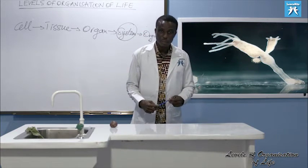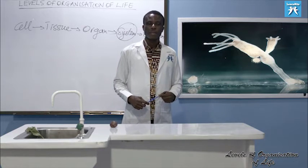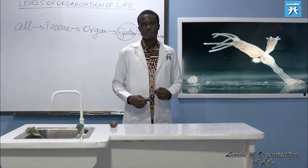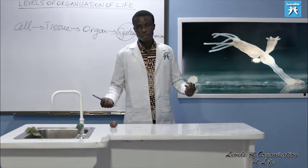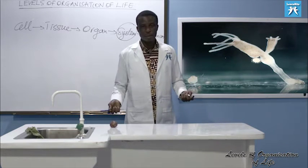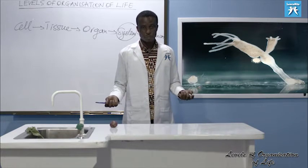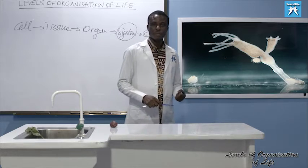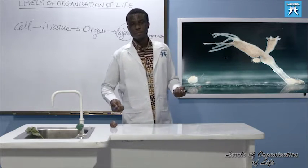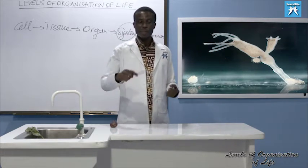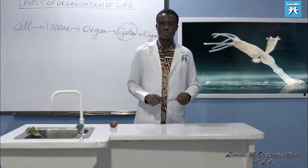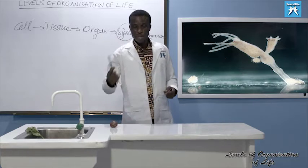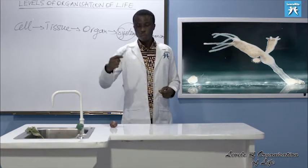I hope you've understood the lesson. Name the five levels of organization in life: cell, tissue, organ, system, organism. Give an example of each level. For a cell: leaf epidermis, red blood cell. For a tissue: leaf epidermis or mammalian blood.